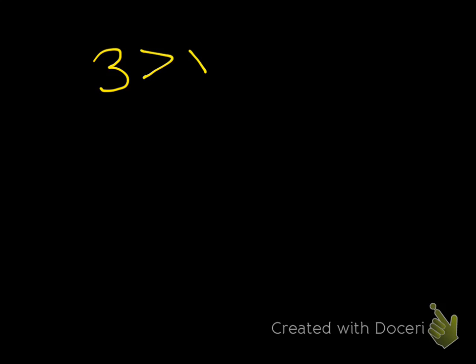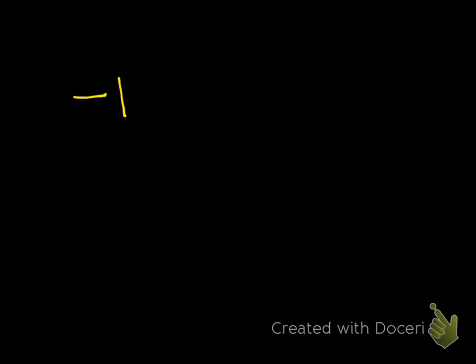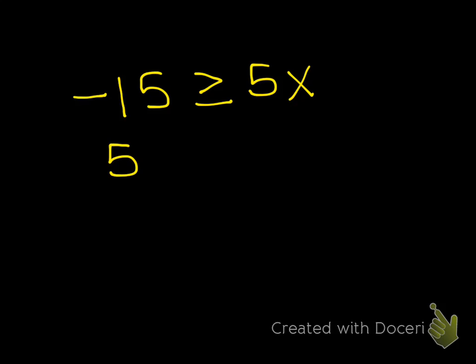This next set is basically telling you to try to put your variable on the left-hand side, because it leads to a better interpretation of the solution. If you say 3 is greater than x, that doesn't mean as much as x is less than 3. They're the same thing, but it's kind of confusing. So we've got negative 15 is greater than or equal to 5x. You can solve it and then switch it around, or I like to switch it around first: 5x is less than or equal to negative 15.